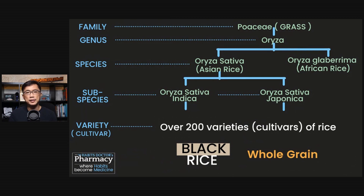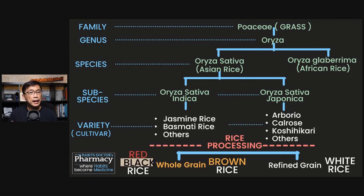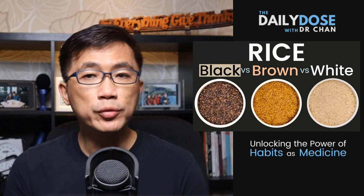Black rice simply refers to whole grain rice that is black in color, and there are more than 200 varieties of rice that are black. So when someone talks about black rice, they are simply referring to whole grain rice that is black in color from any of these 200-plus different cultivars of rice.